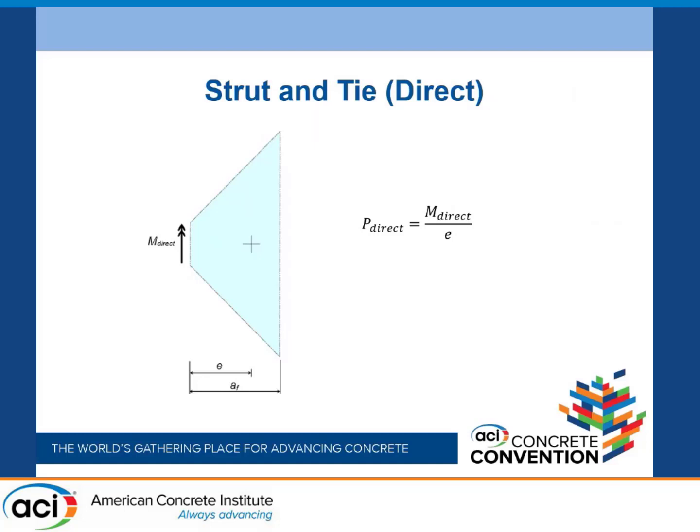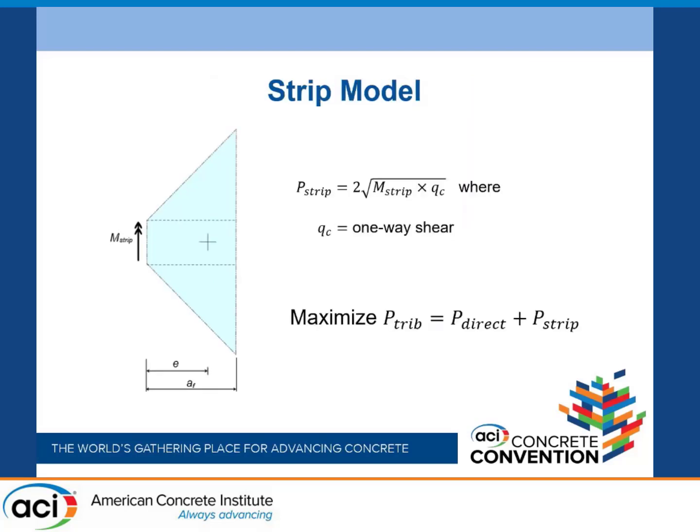Simple statics: if you want the fraction that goes from P-direct, it's just whatever fraction of that moment capacity you've got there. The strip model is a little more complicated — it actually gets more efficient for load applied farther away from the column. Consistent with any load-path type method of design, we should have our most accurate answer when we maximize the sum of these two. The moment at the face is a finite resource. It can do some direct strut-and-tie or it can do some strip, but the sum of those two is limited.